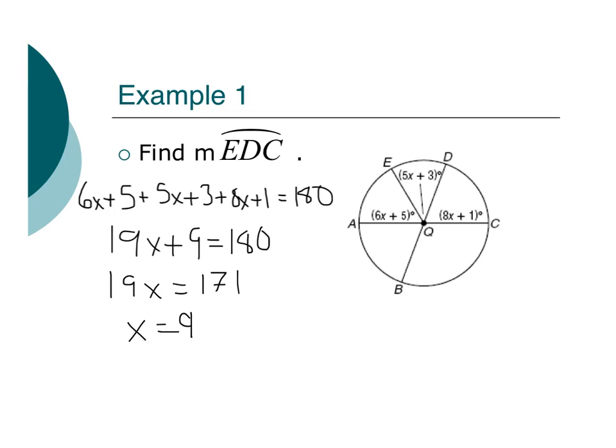Alright, so if I have x equals 9, well, that's not my answer. I need to plug it back in and find EDC. Well, these two added together give me the measure of arc EDC. And once I plug everything in, I get 121 degrees. Remember, arc measure is measured in degrees.